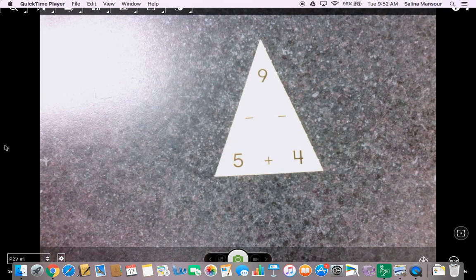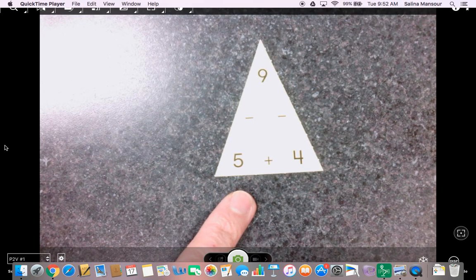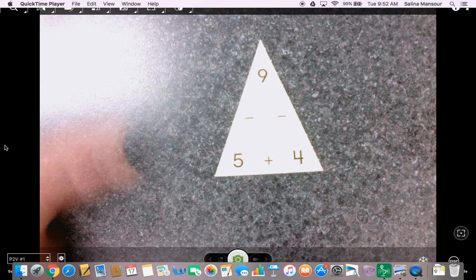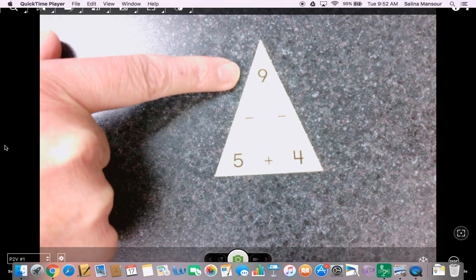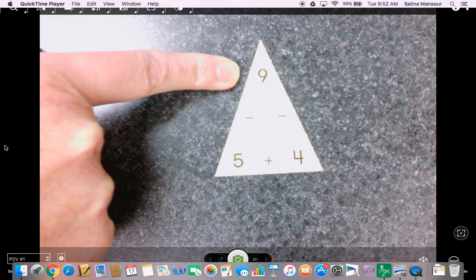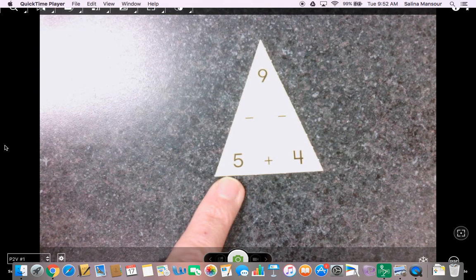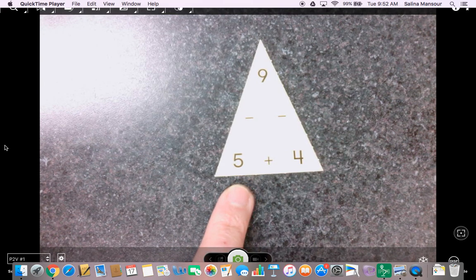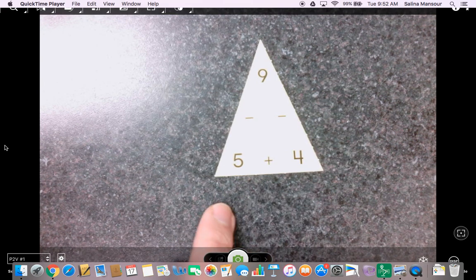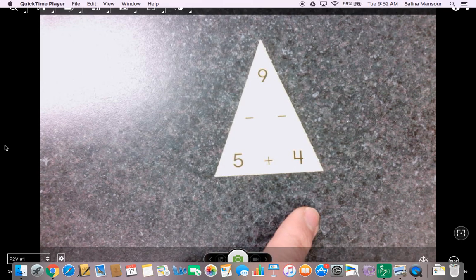What you have here in the language that the children are using in class is the number at the top is what is called your total or your sum, and then the two numbers at the bottom are your add-ends, or you might also hear the children refer to them as the partners.